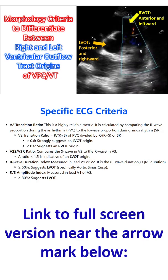When transition occurs at lead V3, simple observation is often insufficient and specific indices are used to refine the diagnosis. The V2 transition ratio is a highly reliable metric. It is calculated by comparing the R wave proportion during the arrhythmia to a reference.